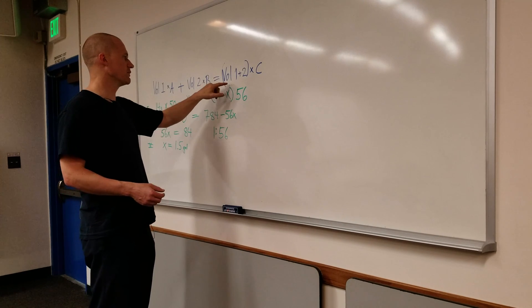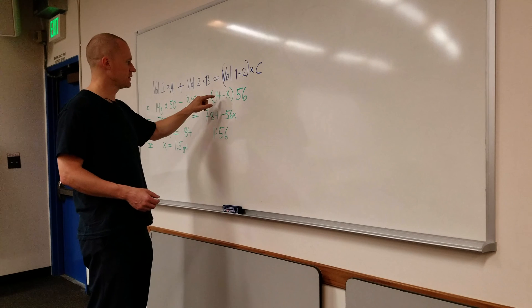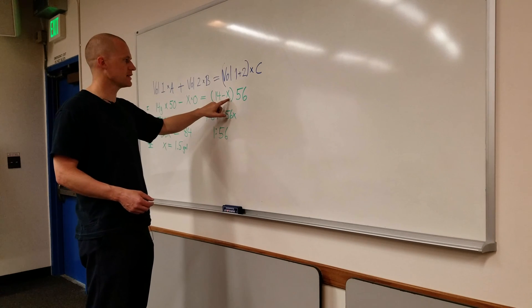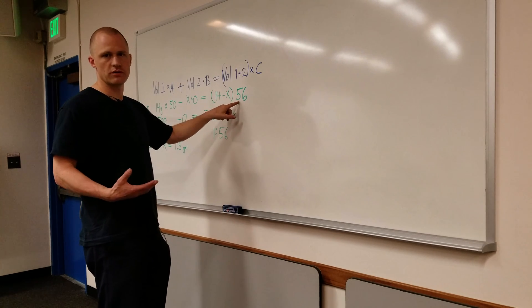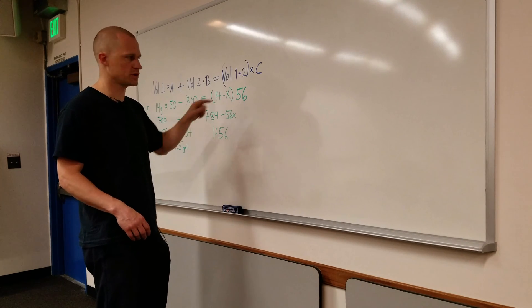Equals the starting volume minus unknown amount x that's boiling off, and multiply that by what we want it to be, 10.56, or just 56.